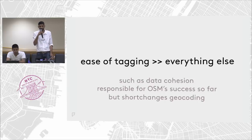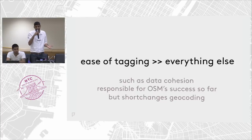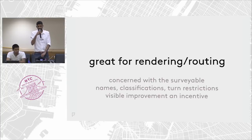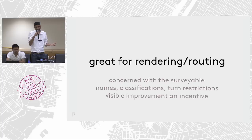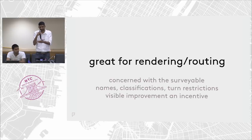Geocoding is a search problem where both retrieval and ranking depend heavily on the structure of the data being queried. It is this structure that enables commercial geocoders to do what they do, and it is precisely this structure that's hardest to replicate with OSM data. OSM's guiding philosophy pragmatically favors ease of tagging for the mapper over everything else, including data cohesion for software — which I think is fine. But as someone who builds geocoders, I can't help pointing out how that shortchanges geocoding as an application. Rendering and routing operate on surveyable data — things observable from the ground — like names, classifications, turn restrictions. Mappers can walk the streets, update the data based on what they see, and those incentives line up perfectly.